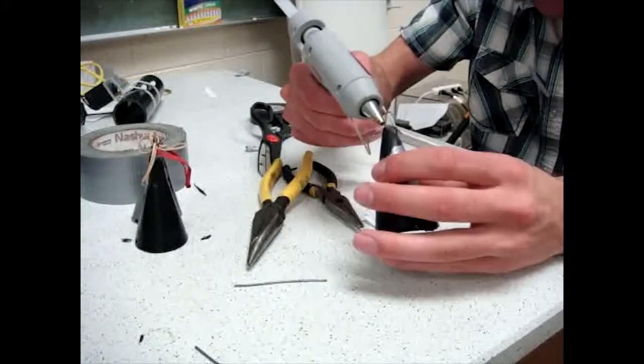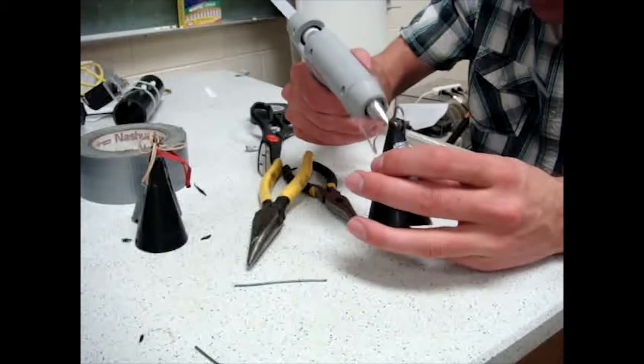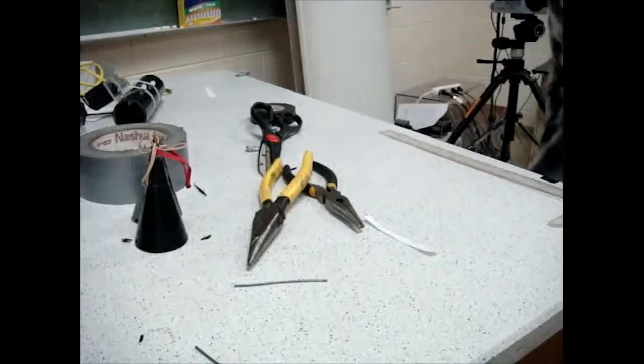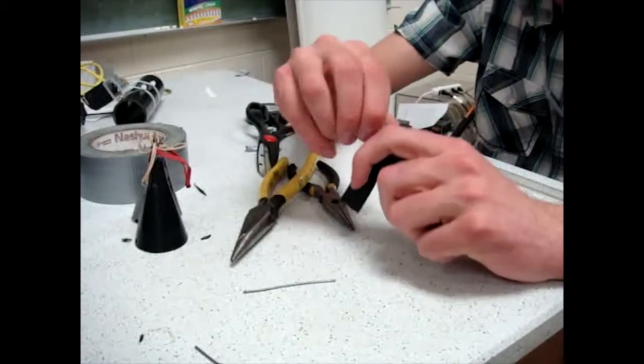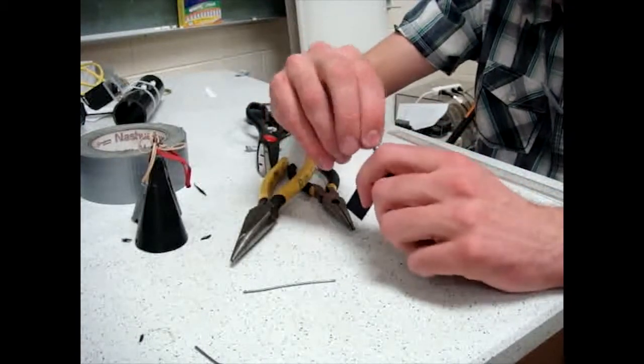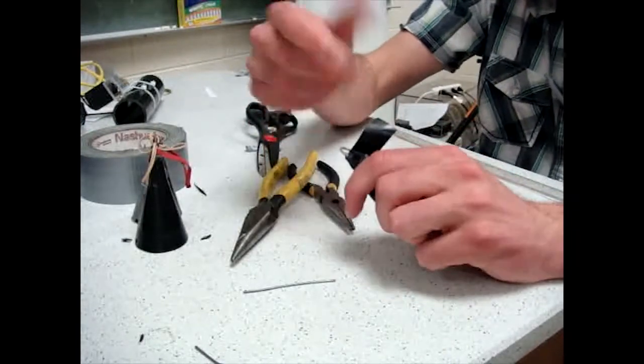Once you are done making the hooks, you will want to completely seal off the ends so that no water can leak through by using hot glue and electrical tape. Make sure you repeat this twice to make the two end caps.